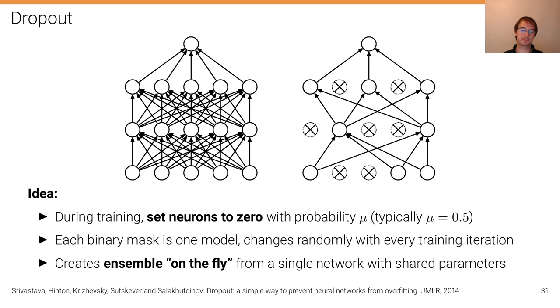Then we do the backward and the forward pass on this simplified model, and then the next training iteration we remove a different set of neurons and we do a forward and a backward pass.